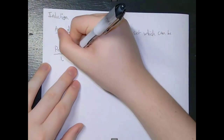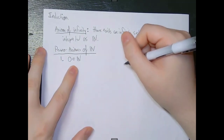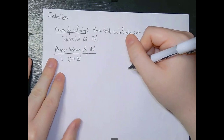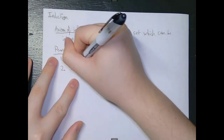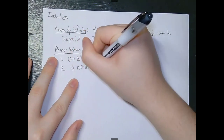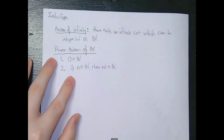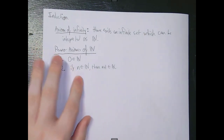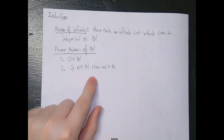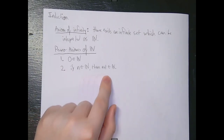The Peano axioms of the set of natural numbers actually give a bunch of rules that define what the elements are that show up in the natural numbers. For people trying to figure out the definition of the natural numbers, the Peano axioms are what conclusively define them. The first Peano axiom states that zero is a natural number. The second one says that if n is some natural number, then n plus one is also a natural number. So we start at zero being a natural number, and then zero plus one gives us one, one plus one gives us two, two plus one gives us three, and so on.